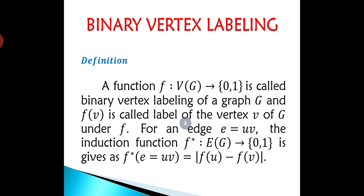In binary vertex labeling, the vertex set is denoted by 0 and 1. Also, the edge set is denoted by 0 and 1. Here, the condition for binary vertex labeling is f*(e = uv) = |f(u) - f(v)|.